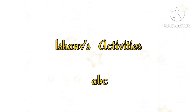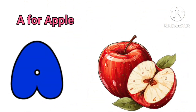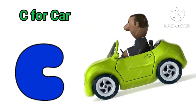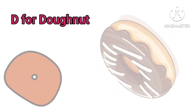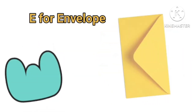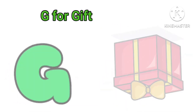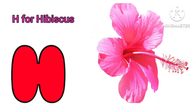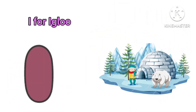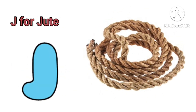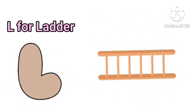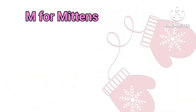Ishanvi's Activities. A for Apple, B for Bamboo, C for Car, D for Donut, E for Envelope, F for Fan, G for Gift, H for Hibiscus, I for Igloo, J for Jute, K for Kitchen, L for Ladder, M for Mittens.